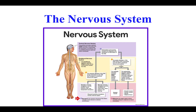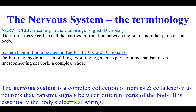Before we get into the specifics of the mechanics of the nervous system, let's focus on the terminology — two words: nervous system. 'Nervous' is derived from the word nerve: a cell that carries information between the brain and other parts of the body. A 'system' is a set of things working together as part of a mechanism or interconnecting network. Neurons aren't just randomly located and don't just fire on their own — it's an organized system. Put that together and the nervous system is a complex collection of nerves and cells known as neurons that transmit signals between different parts of the body. It's essentially the body's electrical wiring system.